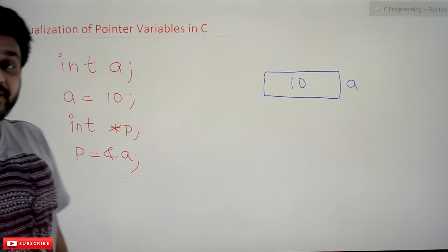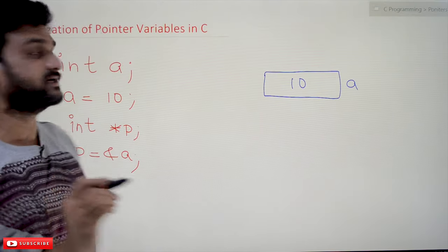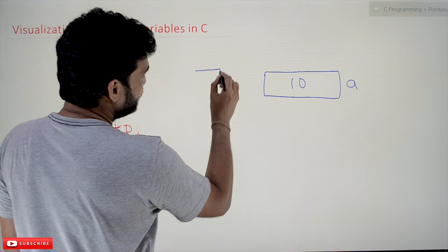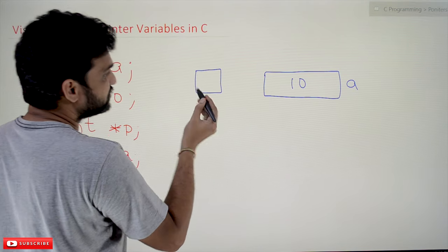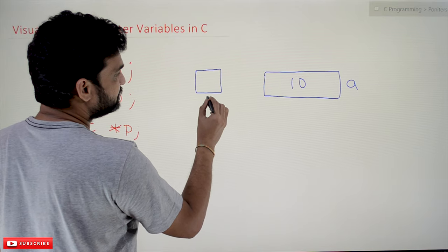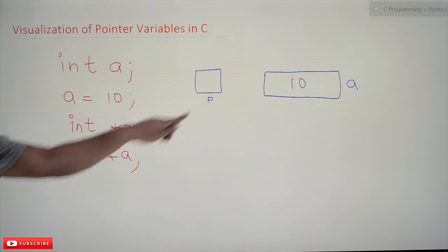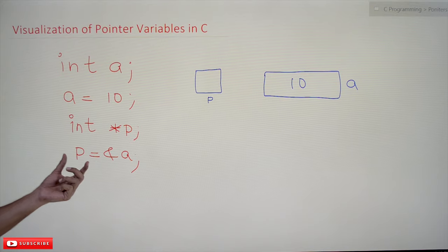So now a pointer variable p—this is how we will try to visualize the pointer variable, and this is the name of this pointer variable: p.